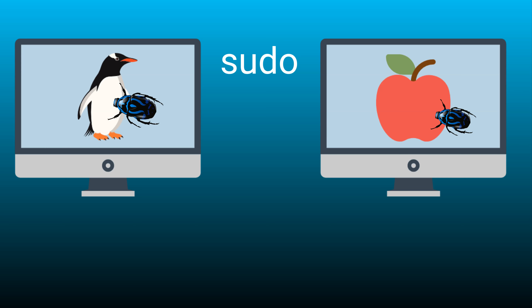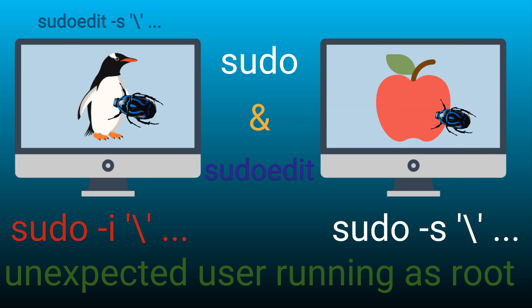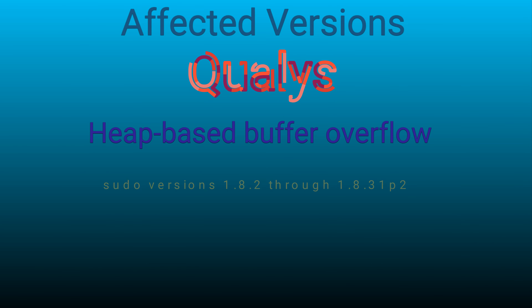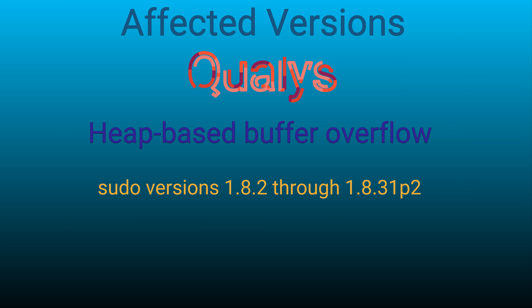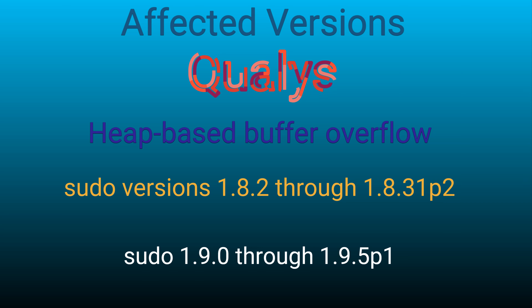With this bug, sudo could be used by a non-sudoer user to gain root privileges. It could be as simple as putting a backslash in a sudoedit -s, sudo -s, or sudo -i commands, with some modifications. The result allows a non-privileged and non-sudoer user to escalate privileges to root. This bug was discovered by the security experts at Qualys, and affects sudo versions 1.8.2 through 1.8.31p2, and 1.9.0 through 1.9.5p1.